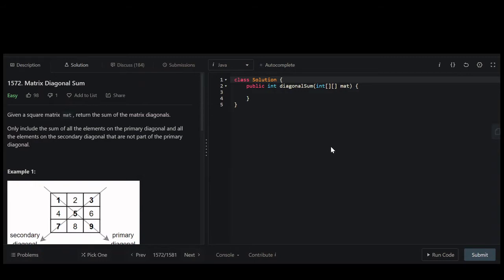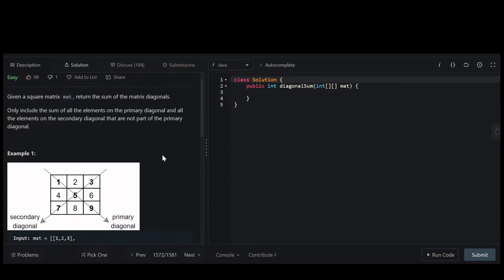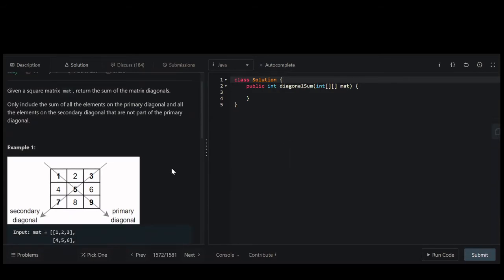In this problem, we are given a square matrix, and we are to return the sum of the matrix diagonals. Only include the sum of all elements on the primary diagonal and all elements on the secondary diagonal that are not part of the primary diagonal.